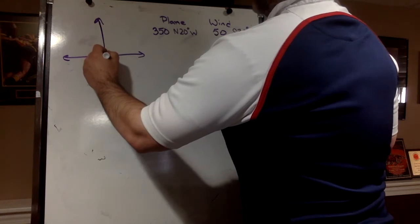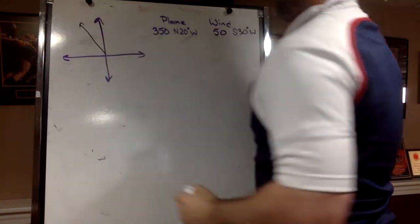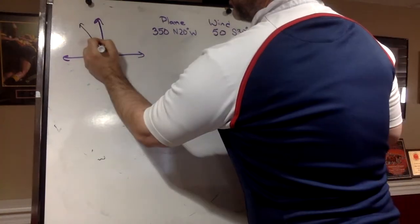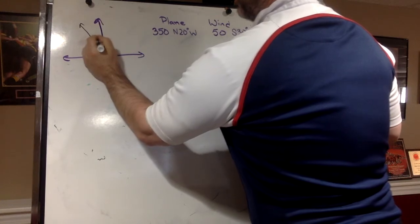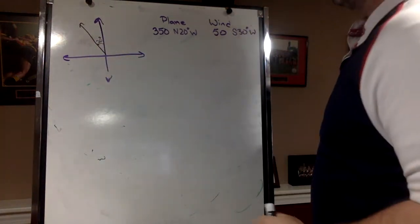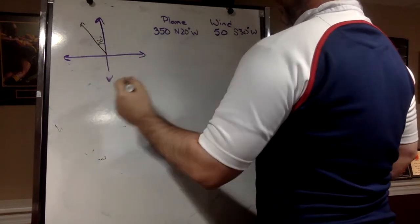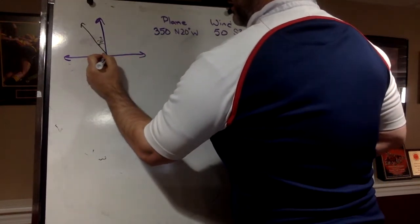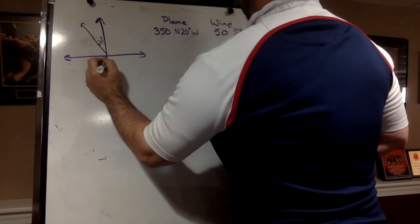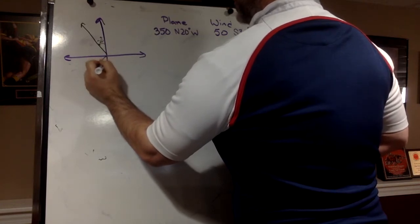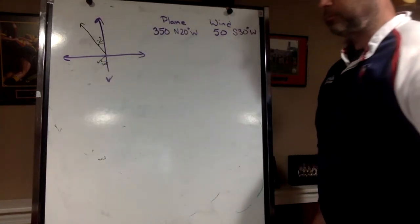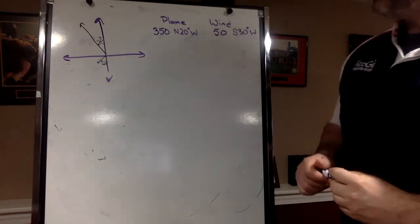Here's our airplane at 350 miles an hour, north 20 degrees west. Remember, right there from north, 20 degrees west. And our wind would be down here, much smaller, one-seventh in size.